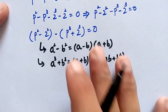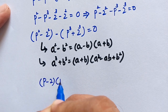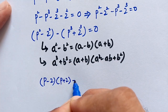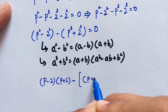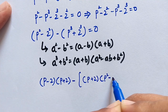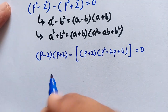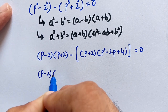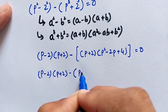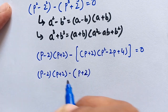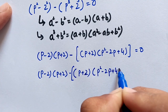Now we apply these identities. For the squared terms this becomes p minus 2 times p plus 2, and for the cubic terms we apply the cubic identity, giving p plus 2 times p squared minus 2p plus 2 squared, which is equal to 4. This whole expression is equal to 0.